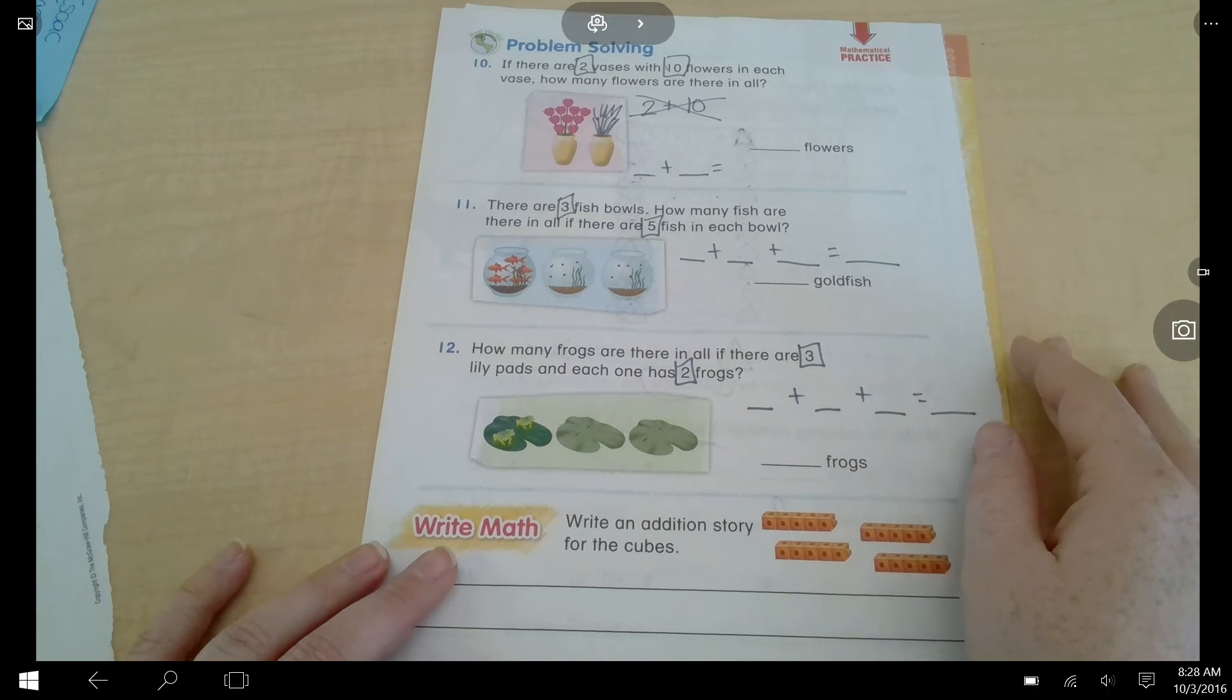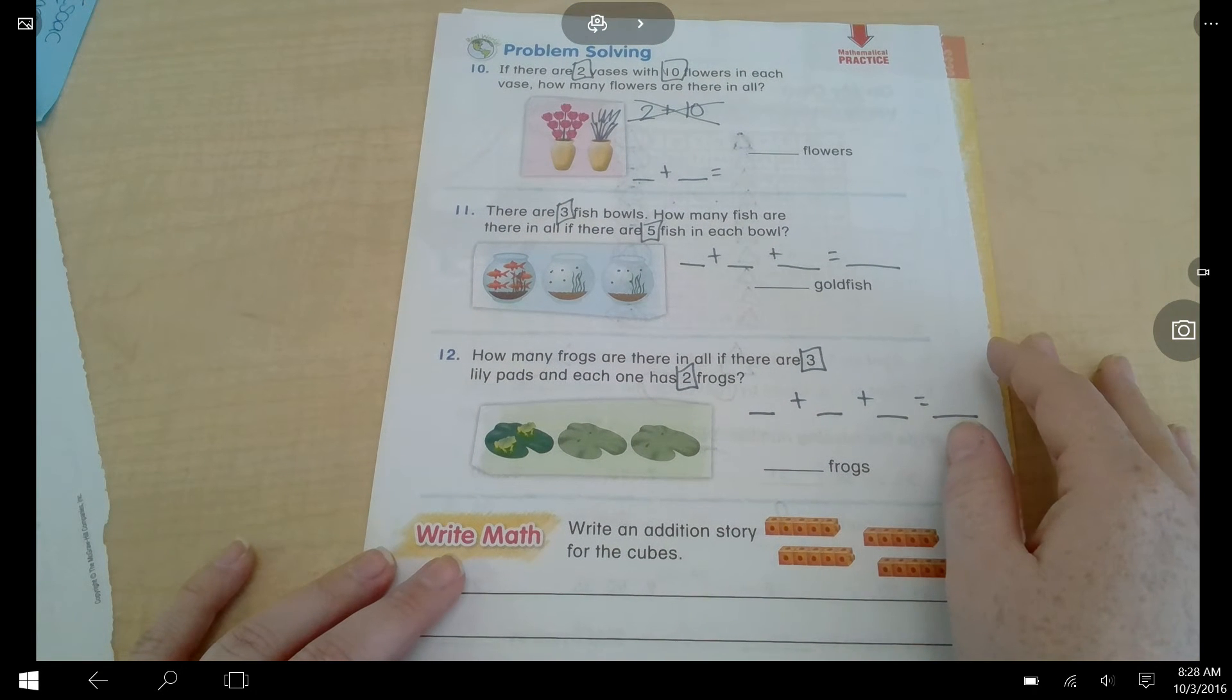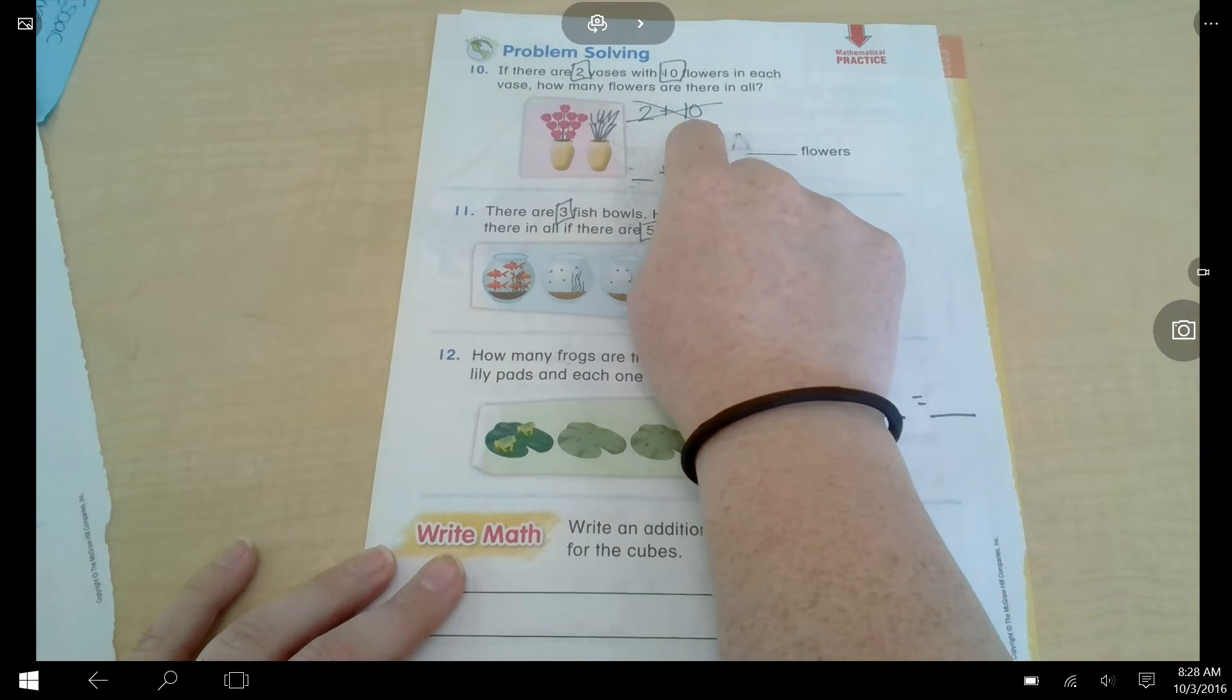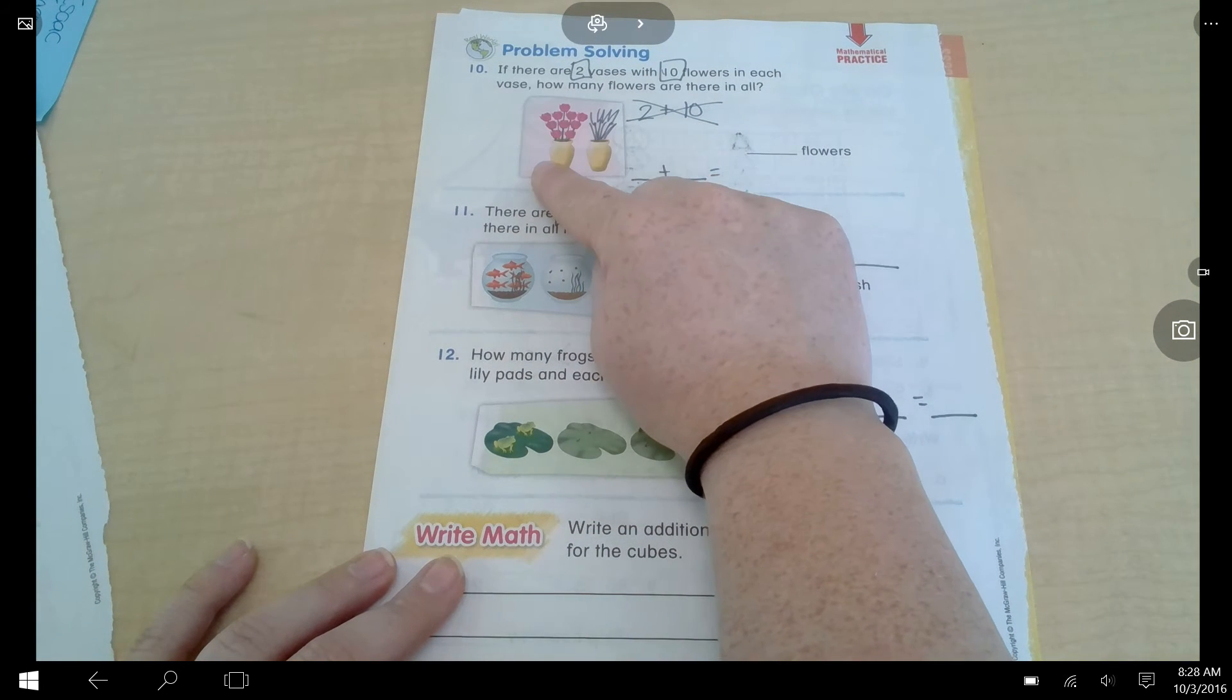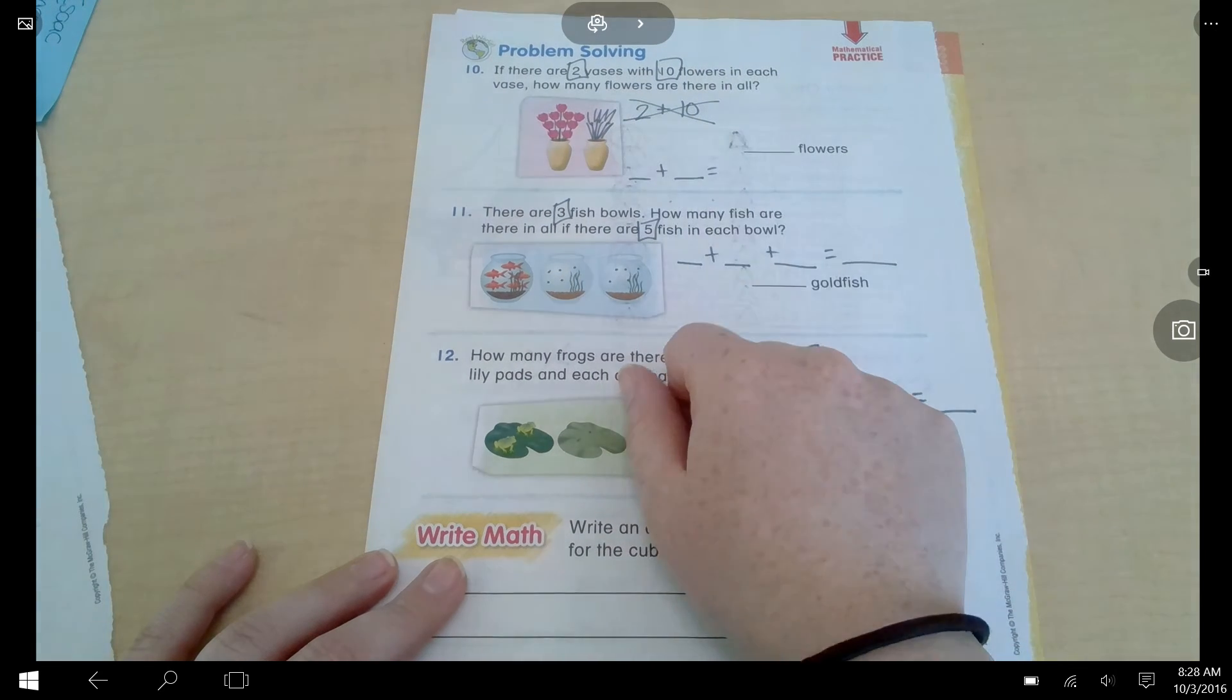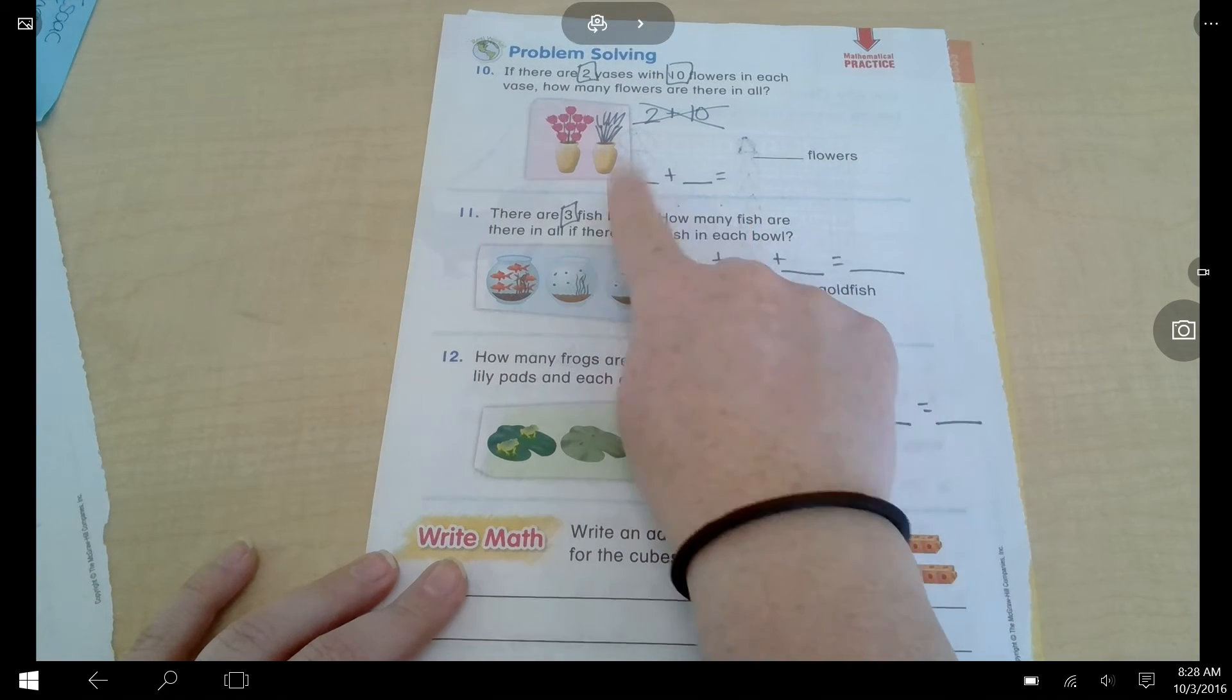Here are your word problems. If there are two vases with 10 flowers in each vase, how many flowers are there in all? You're not going to do 2 plus 10. Because it's not two flowers in one vase and 10 flowers in the other. Both vases have 10 flowers.